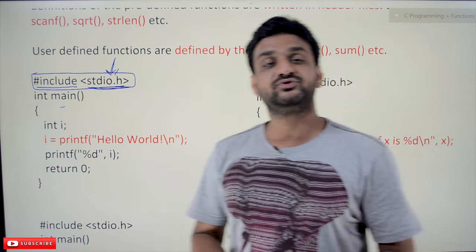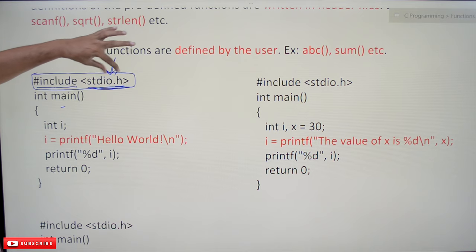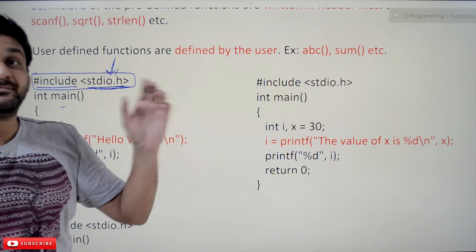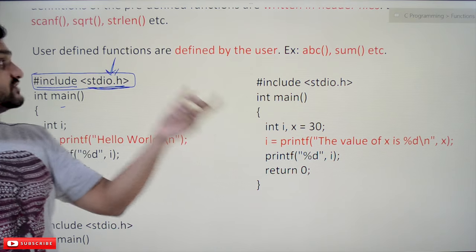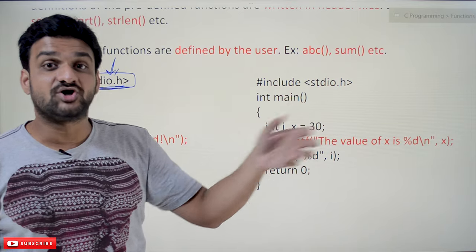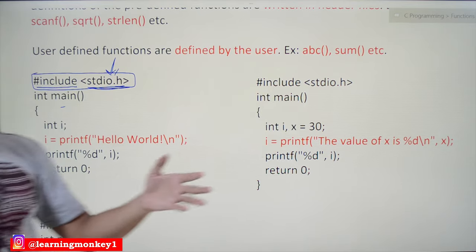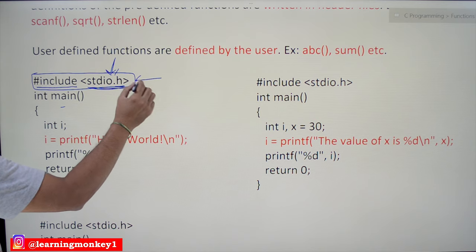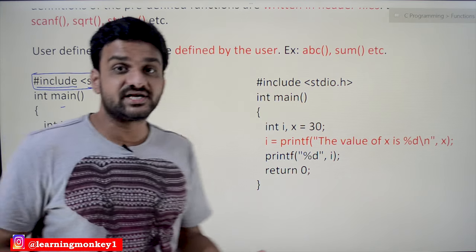For example, if you want to do square root of a number, that will not be in stdio.h — it will be in math.h header file, which we haven't used so far. If you take string length, it is in string.h — all the functionalities of strings are in the string.h header file. So this is what we call including the header files.